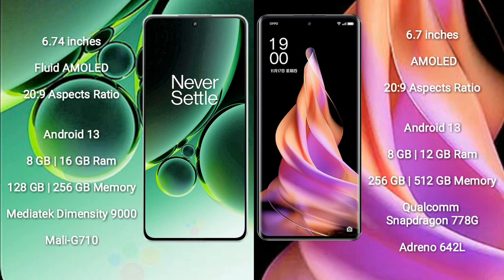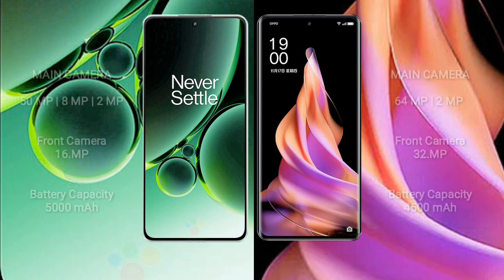OPPO Reno 9 comes with 8GB or 12GB RAM and 256GB or 512GB internal storage, powered by a Qualcomm Snapdragon 778G processor and Adreno 642L GPU.